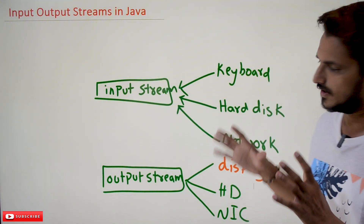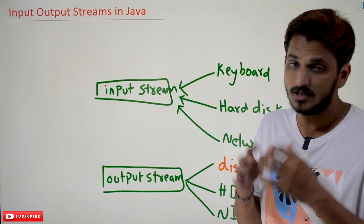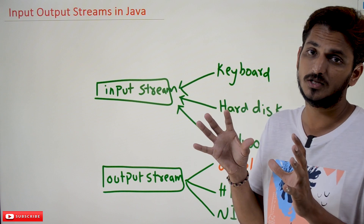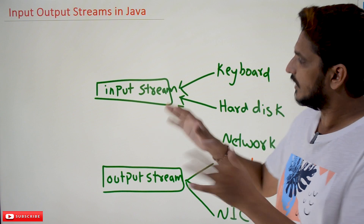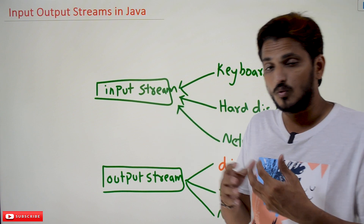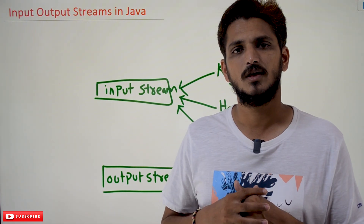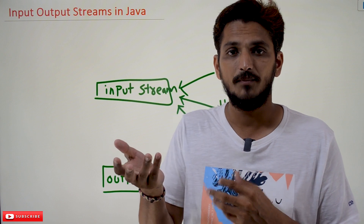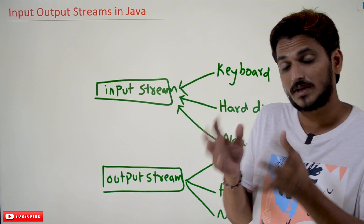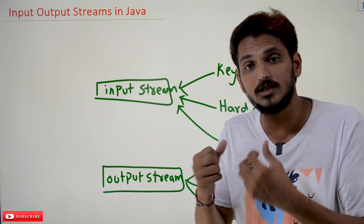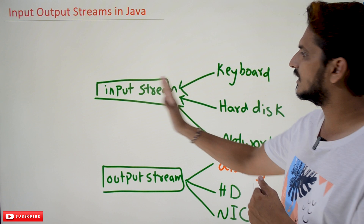Coming to today's class, first we need to understand a few concepts related to input and output streams. So, when we write Java programs, from where are we going to get the data? We will give input from the keyboard — our Java programs have to get data from the keyboard. Not only that, sometimes we are going to get data from the hard disk. We need to get the data from the hard disk.